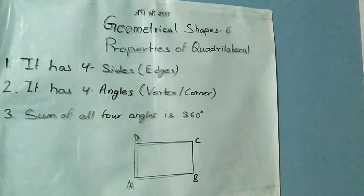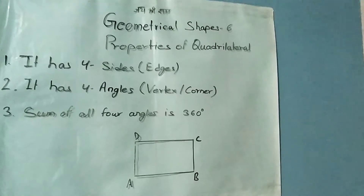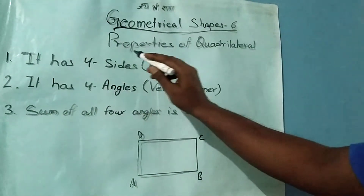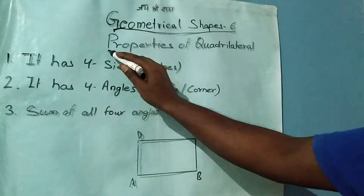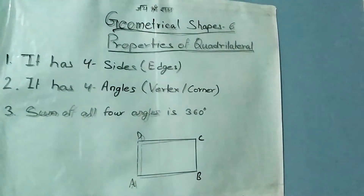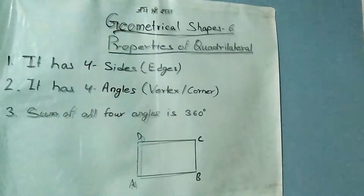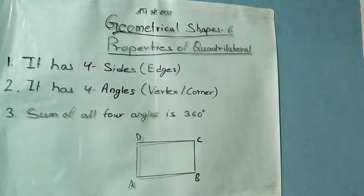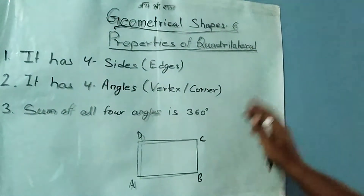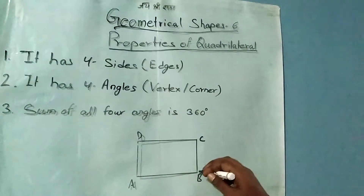Hello friends, welcome to my YouTube channel Science S. The topic is Geometrical Shapes 6 and the subtopic is properties of quadrilateral. Today we will talk about properties of quadrilateral. In the last video we talked about properties of triangle, now we are talking about properties of quadrilateral. A quadrilateral means a four-sided figure — any four-sided figure is called a quadrilateral.